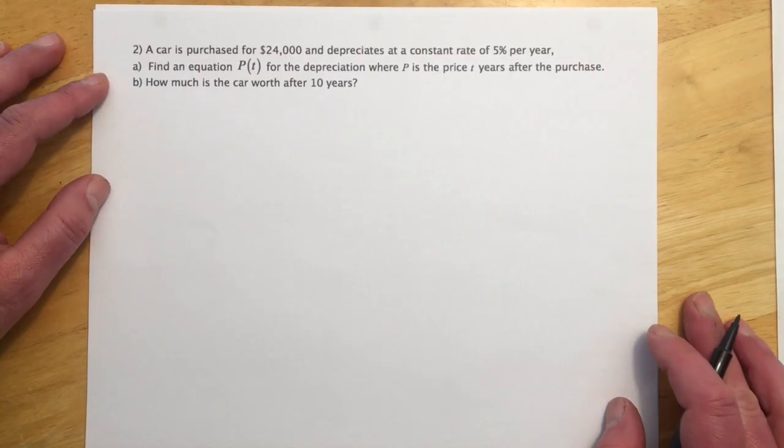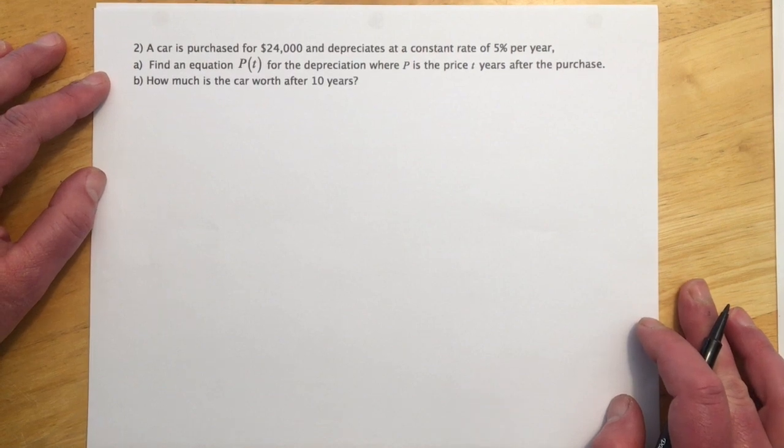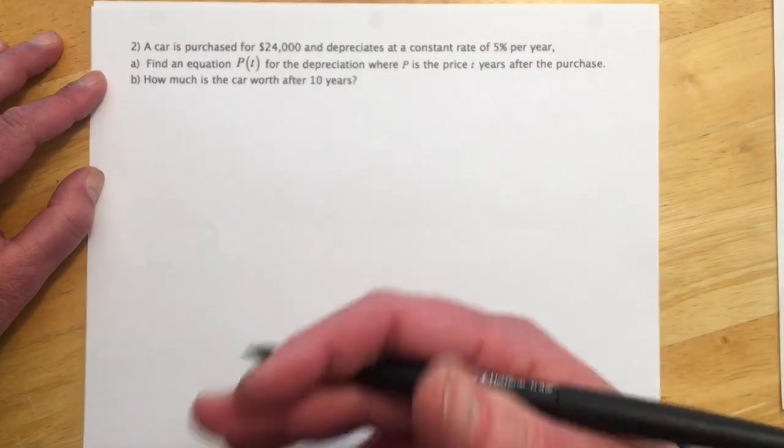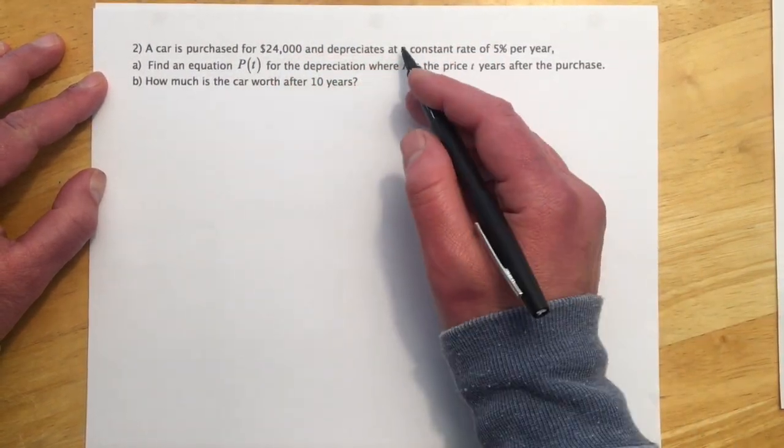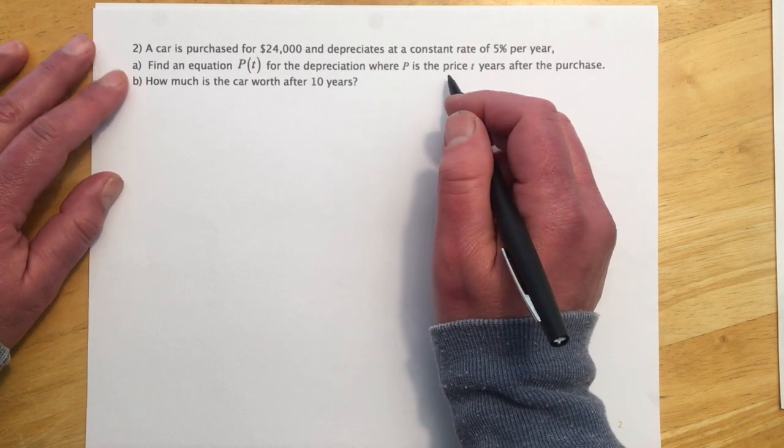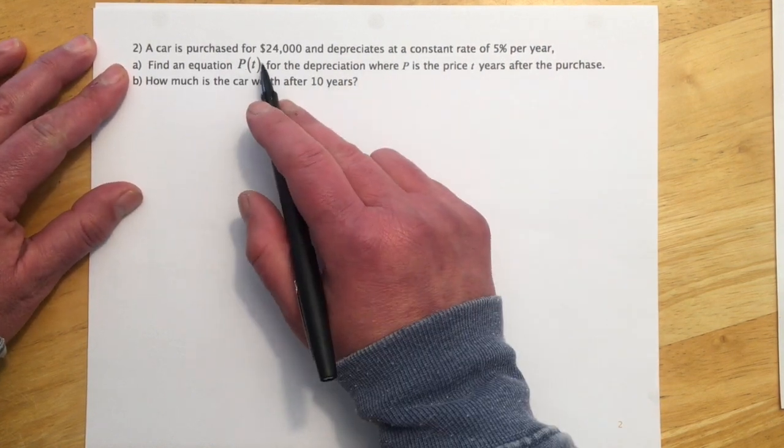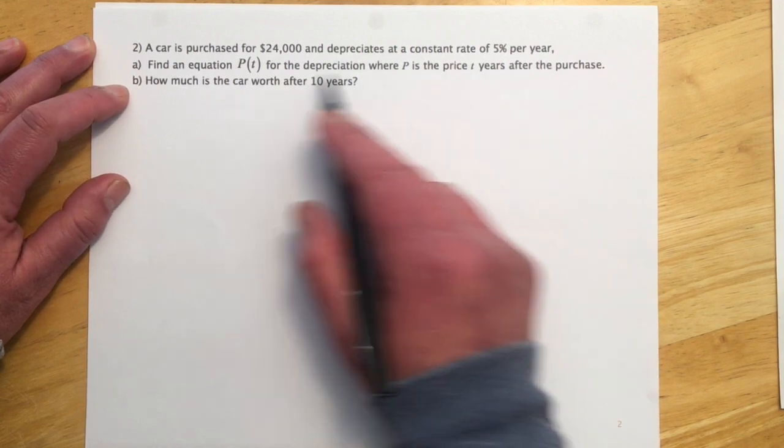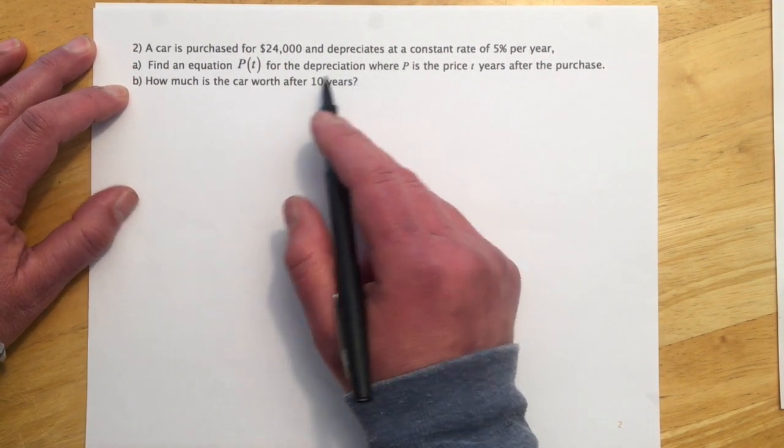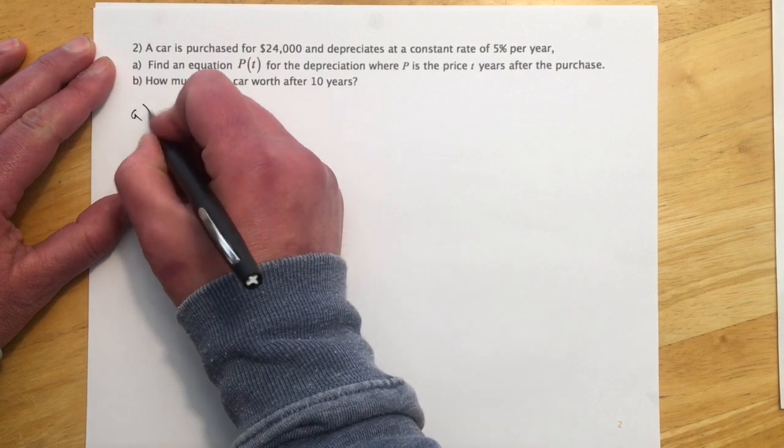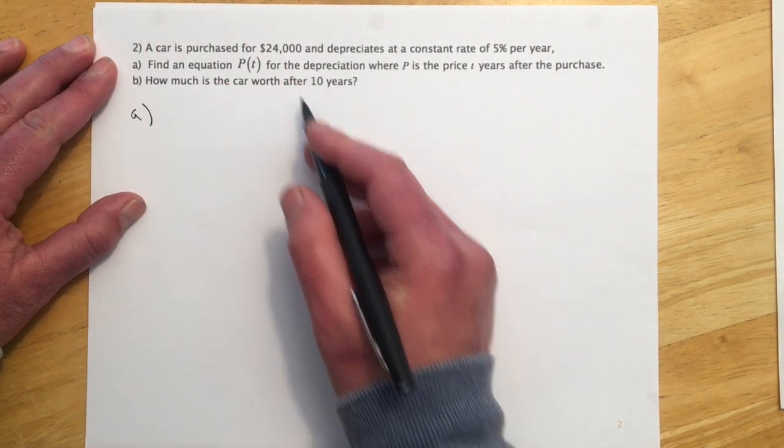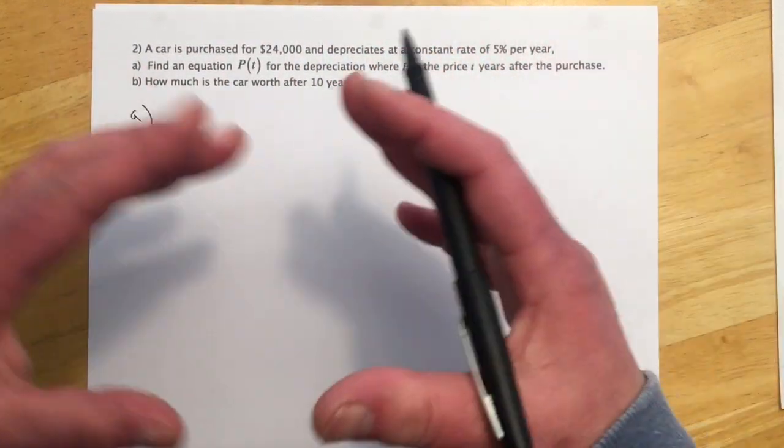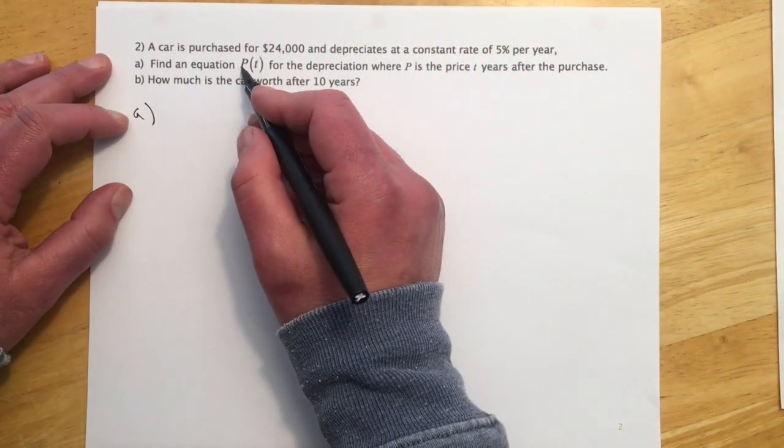So for number two, a car is purchased for $24,000 and depreciates. So this time our rate's going to be negative because it's becoming less valuable. At a constant rate of 5% per year. A, find an equation P(T) for the depreciation, where P is the price, two years after the purchase. And B, how much is the car worth after 10 years? So part A is just setting up the equation. So we're not trying to solve for anything. We're just trying to get this information into an equation.